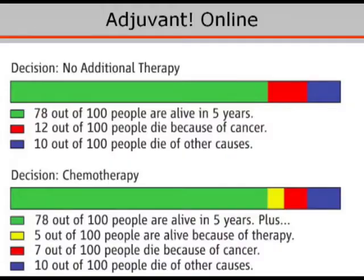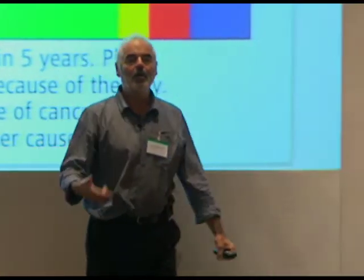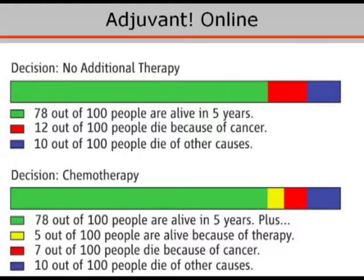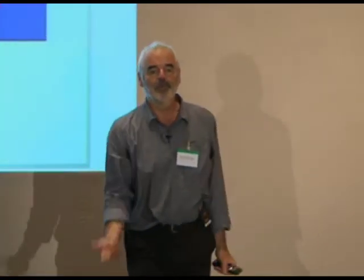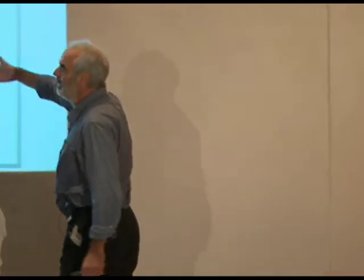Bar charts are very popular. This one is used by Adjuvant Online, a website to help clinicians communicate to their patients the benefits of chemotherapy. What's interesting is they're using the whole 100%, which allows a part-to-whole comparison. They're not just showing the bit of benefit. Five out of a hundred women will benefit because of the chemotherapy — those are the ones alive because of therapy. So a number needed to treat of 20 in this case — quite clearly communicated.